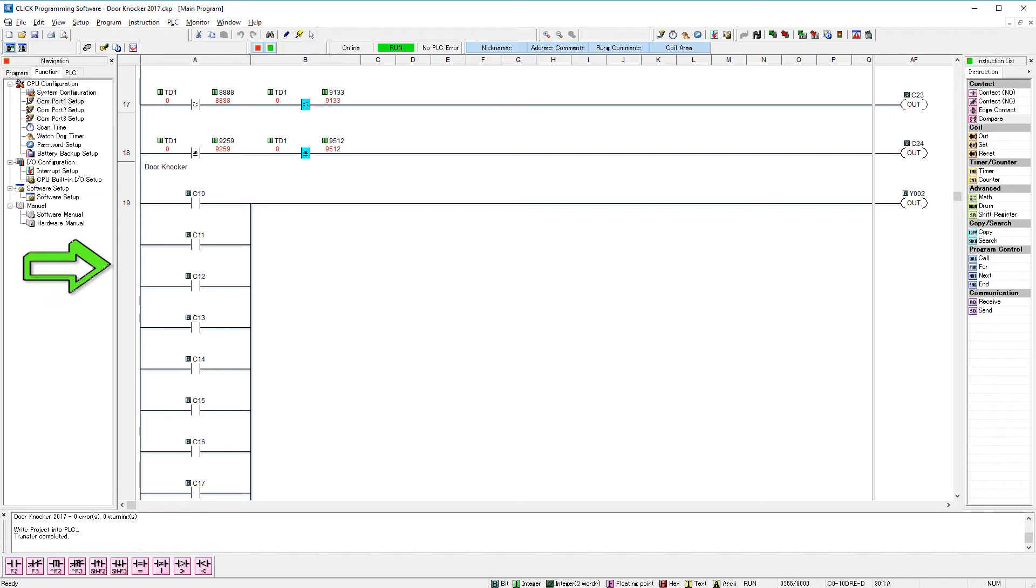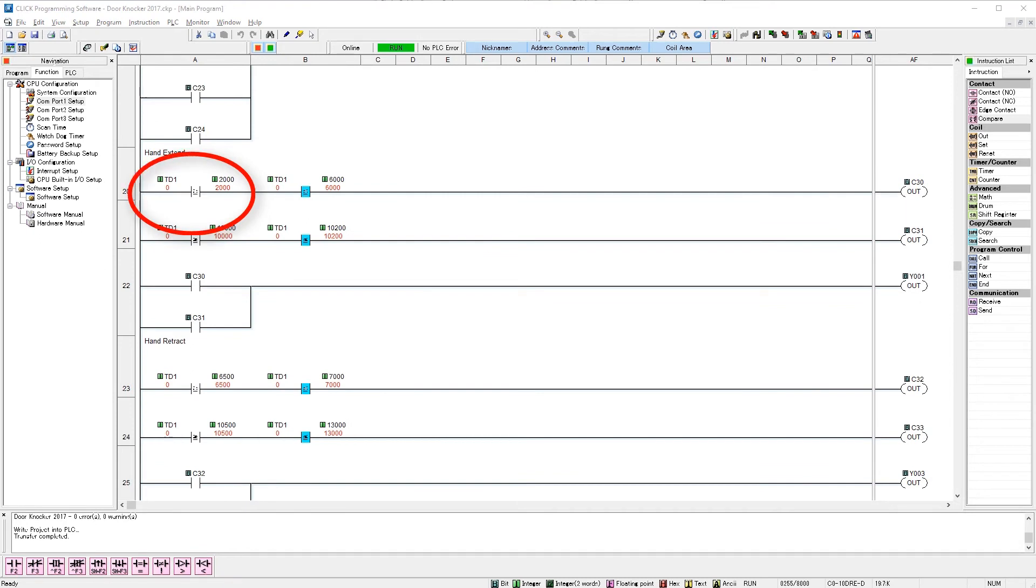On rung 19 I have all the C bits used in the timer comparisons. If any of the C bits are on or true, then the output Y2 is turned on. Output Y2 controls our door knocker. If you noticed, I used compare statements using milliseconds and not seconds. Milliseconds work better for triggering the output on and off quickly.